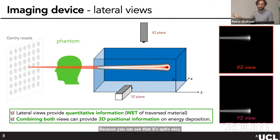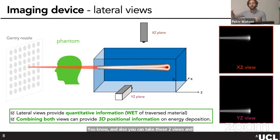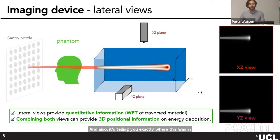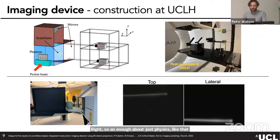The lateral views provide quantitative information because you can clearly infer the proton range. Taking two views and combining them lets you pinpoint where most of the energy was deposited. This does a double job: giving a quantitative measurement of the WET and telling you exactly where this was in space — information that we can use for imaging.